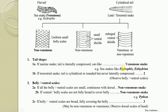All snakes with a laterally compressed tail living in sea water are categorized as venomous. Examples of sea snakes with a laterally compressed tail include Hydrophis and Enhydrina. If your snake does not show this kind of laterally compressed tail, skip this key and read the next one.